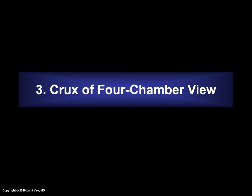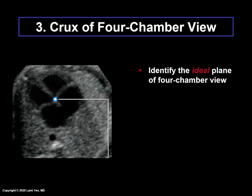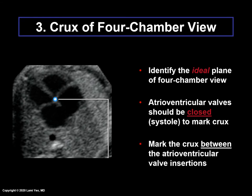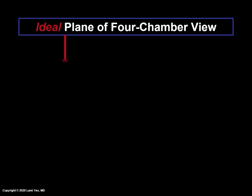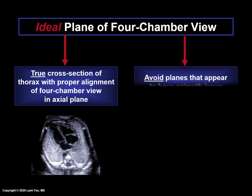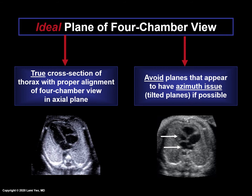Crux of the four-chamber view: to mark the crux, identify the ideal plane of the four-chamber view — the same plane used to mark the aorta. The atrioventricular valves should be closed in systole. Then mark the crux between the atrioventricular valve insertions. An ideal plane is a true cross-section of the thorax with proper alignment of the four-chamber view in the axial plane. Avoid planes that appear to have an azimuth issue or tilted planes if possible. Azimuth is recognized by visualizing a foreshortened atria or ventricle.